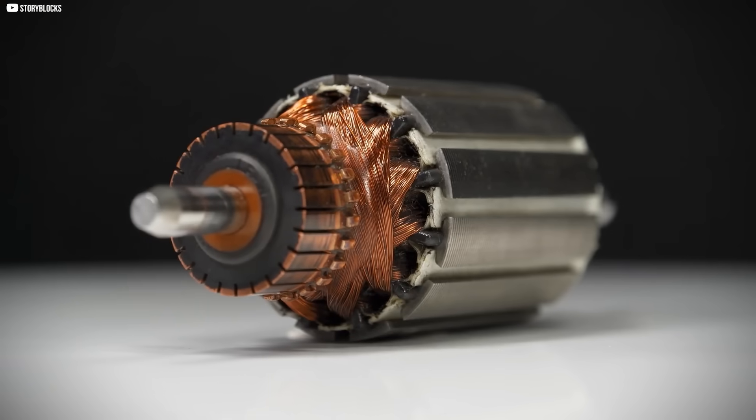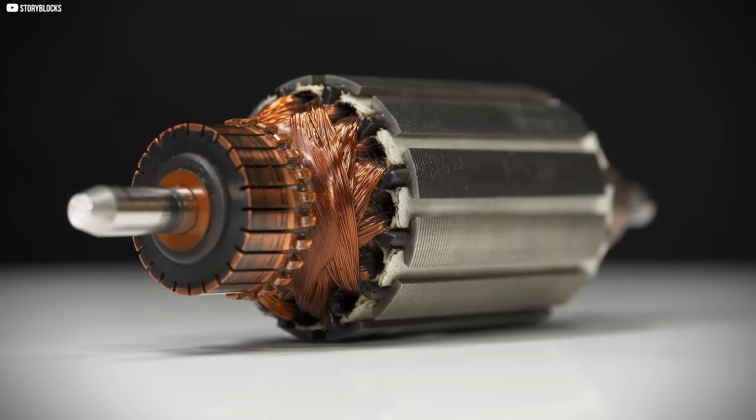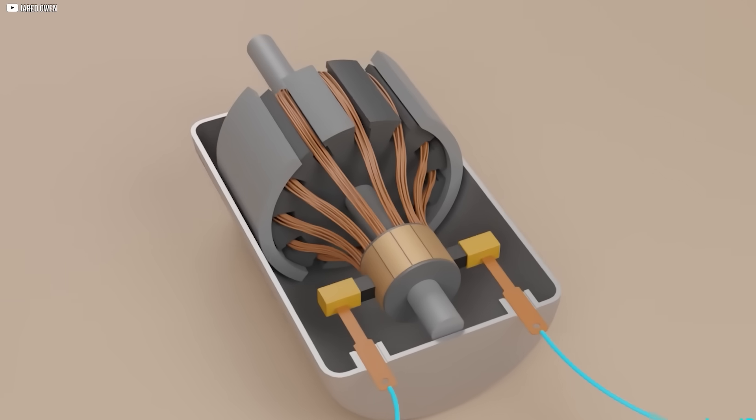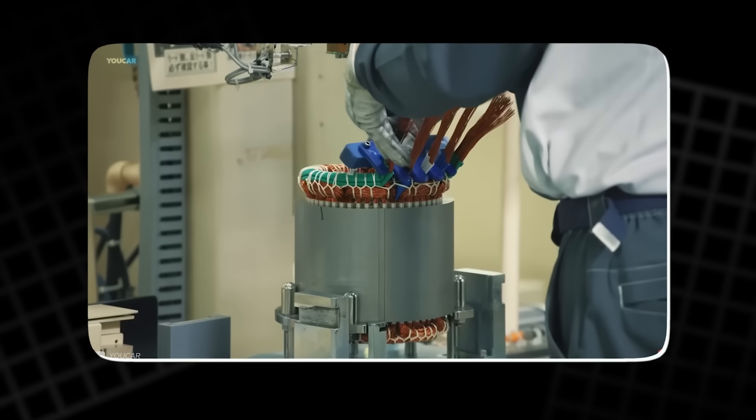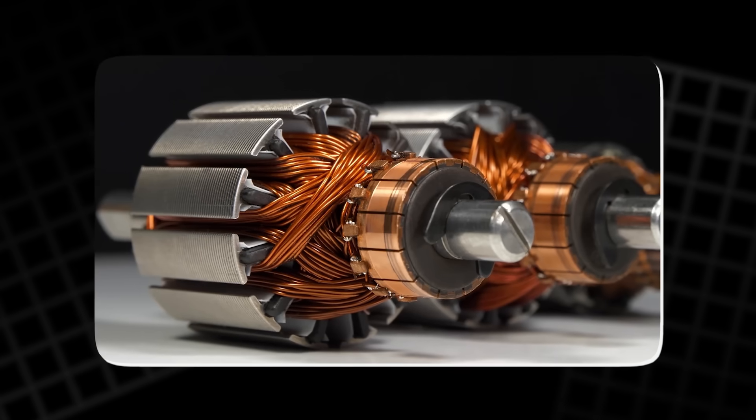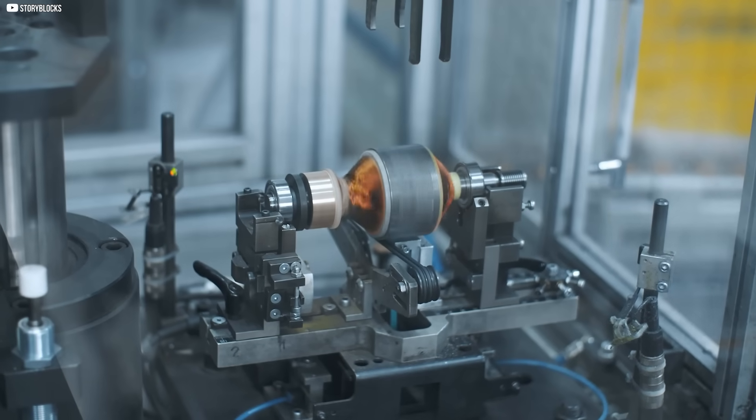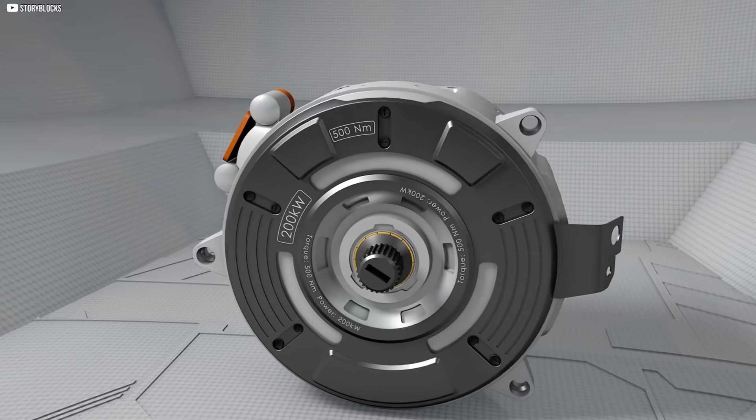What makes this different isn't just the material, it's what the material allows - flexibility, lightness, adaptability. Motors that aren't fixed in shape or form. Wiring that wraps instead of roots. Machines that respond to the body instead of resisting it. Once manufacturing catches up, and it will, these motors could start appearing where we least expect - in soft medical devices, foldable drones, ultralight e-bikes, even clothing that moves and responds on its own.